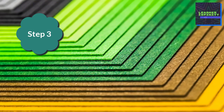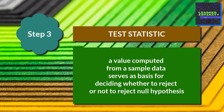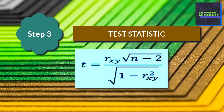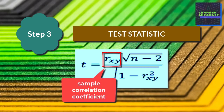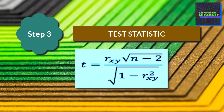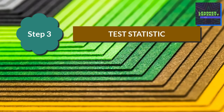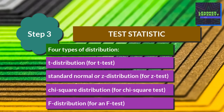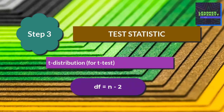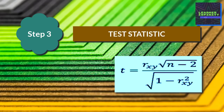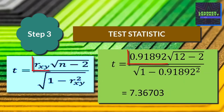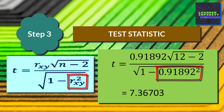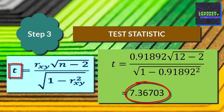The third step is to calculate the test statistic. A test statistic is a value computed from sample data which serves as our basis for deciding whether to reject or not reject the null hypothesis. The formula for our test statistic, the t-value, is: sample correlation coefficient r times the square root of sample size n minus 2, divided by the square root of 1 minus the squared sample correlation coefficient r. The t-test has a t-distribution with n minus 2 degrees of freedom if the null hypothesis is true. In our example, the t-value is computed as 0.9819 times the square root of 12 minus 2, divided by the square root of 1 minus the square of 0.9819, which equals 7.36703.